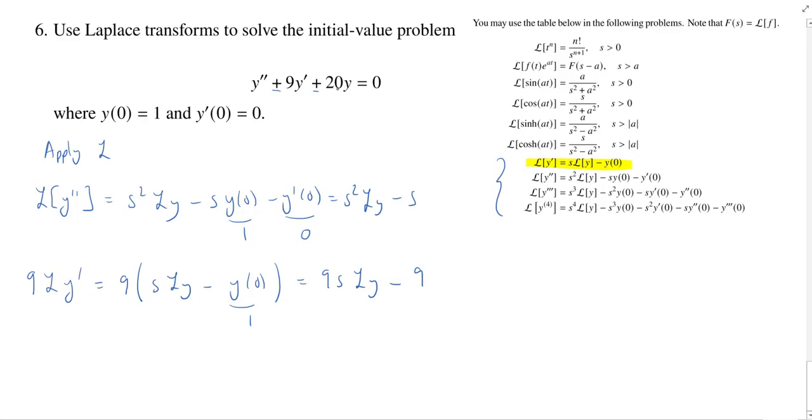And then finally, we're taking the Laplace transform of 20y. Well, that's just 20 times the Laplace transform of y. So what do we have in total? We have s squared Ly minus s. Then we're going to have plus 9sLy minus 9, and then we need the 20Ly's. And that's going to equal 0, because this is the Laplace transform of 0.